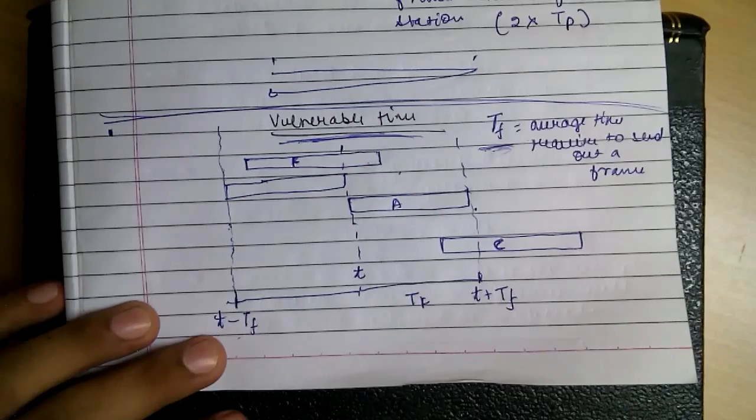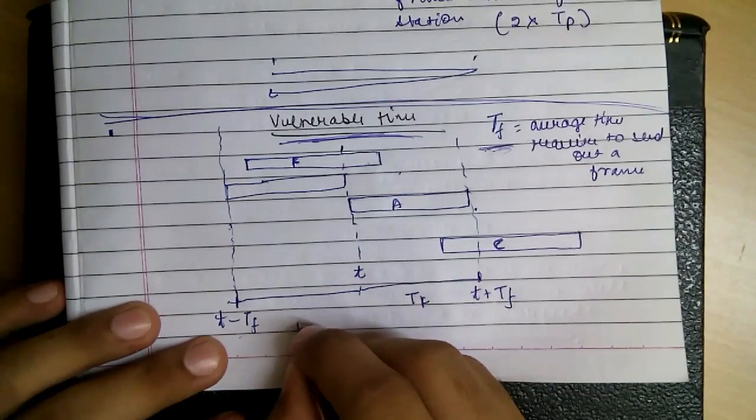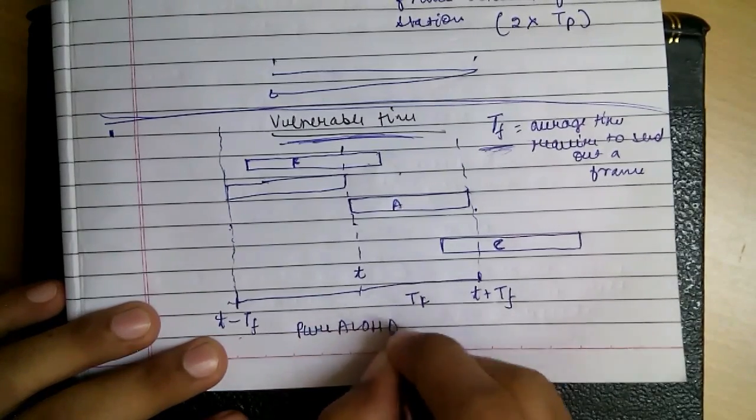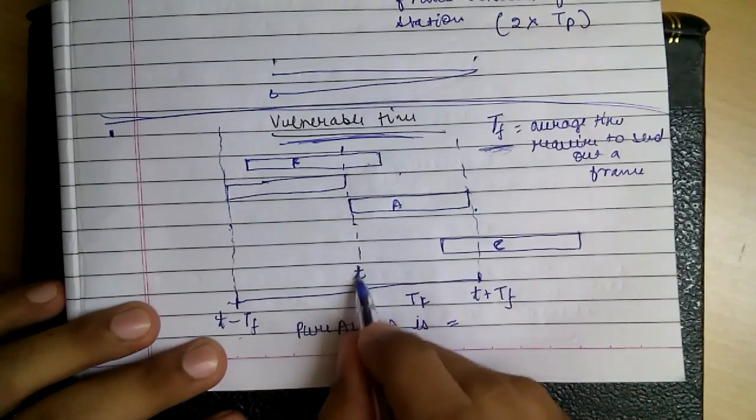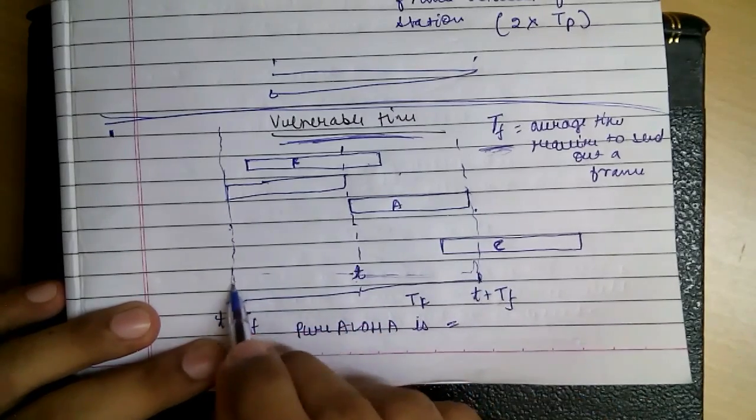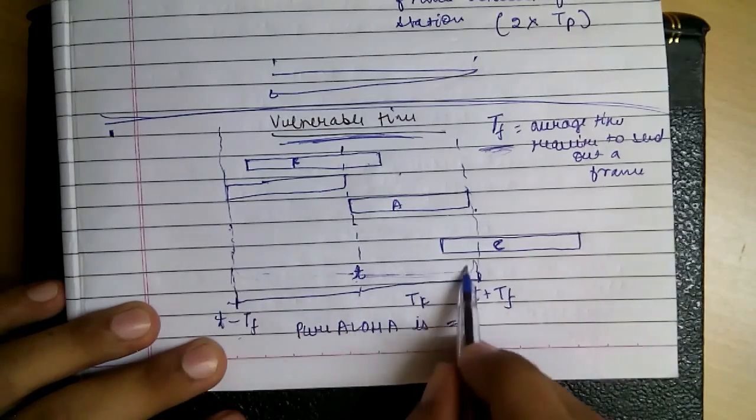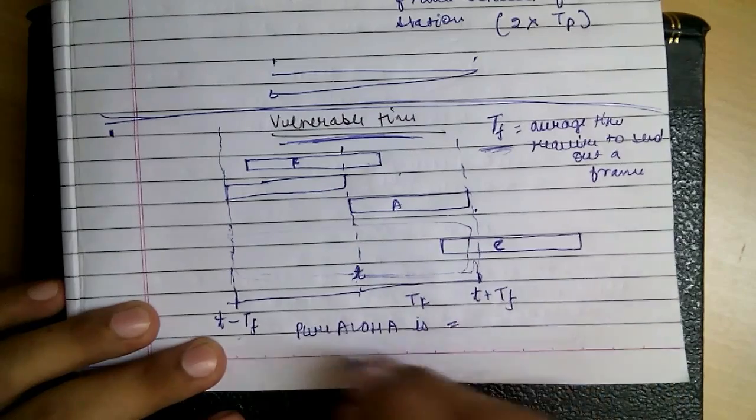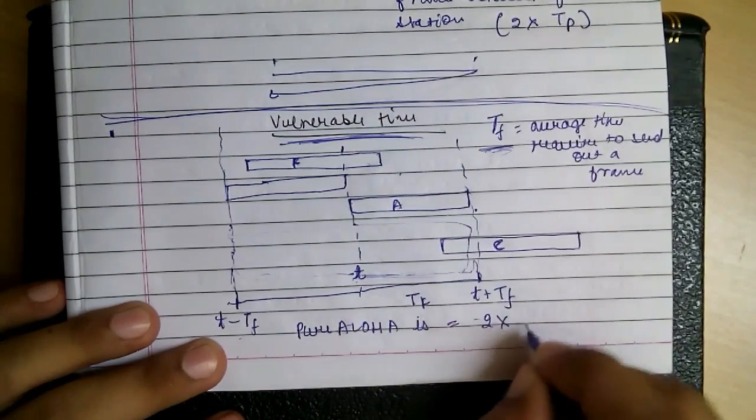Now you can get what it means to be vulnerable time. It is the time in which the collision can occur. The vulnerable time of pure Aloha is this T and the TF slot after it and the TF before it. If no other frame is in between then there won't be a collision. So the vulnerable time of pure Aloha is 2 into TF.